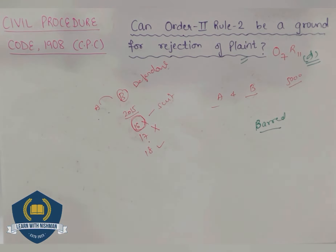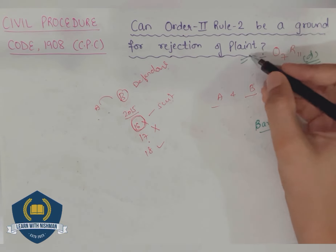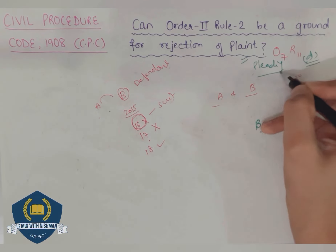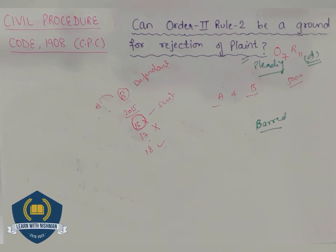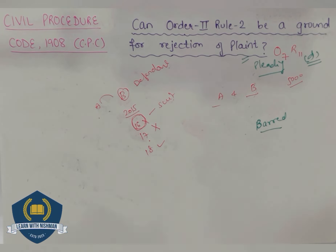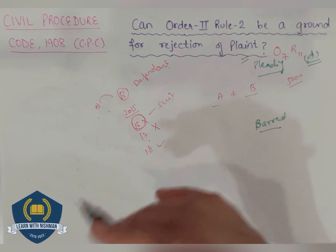Order 7 Rule 11 clearly requires that if the bar of suit appears from the pleading of the plaint itself, then the plaint shall be rejected. If you can see from the plaint's pleading that yes, it is barred, then it will be rejected — there is no need to give evidence. If it doesn't appear from the statement, rather you have to give evidence to prove the bar. The suit can be dismissed, but the plaint cannot be rejected.